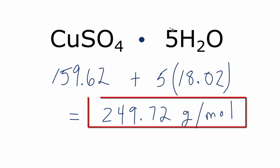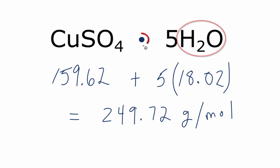So the key here is to realize that this 5 applies to the whole water molecule and that this dot here doesn't mean multiply. The dot means we're just going to add the 5 H2Os to the molar mass of the copper sulfate.